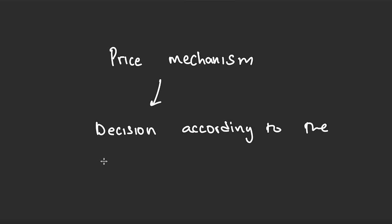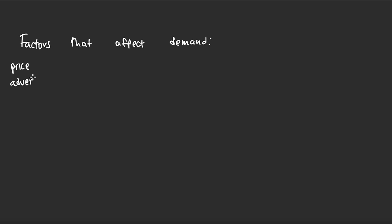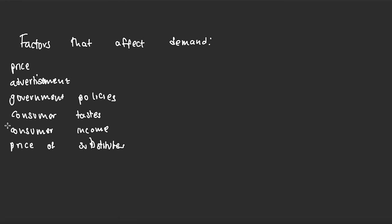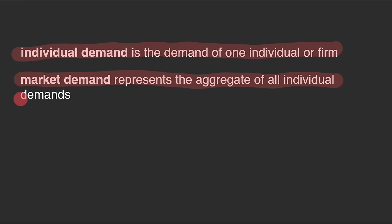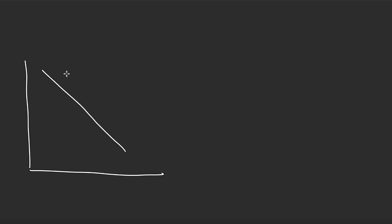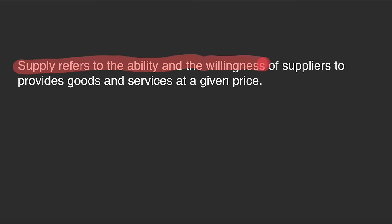The price mechanism is when decisions are made according to the equilibrium point where the supply and demand curves meet. Demand refers to the willingness and ability of customers to buy goods and services at a given price — the higher the price, the less the demand. Factors that affect demand include price, advertising, government policies, consumer tastes, consumer income, price of substitutes, and interest rates. Individual demand is the demand of one individual or firm; market demand is the aggregate of all individual demands. Movement along the curve is due to a change in price, while a shift of the curve is due to the other factors of demand.